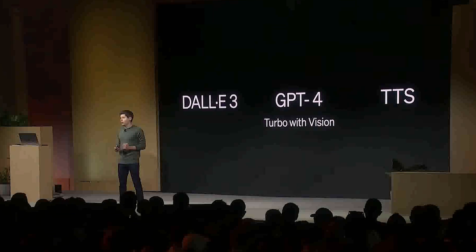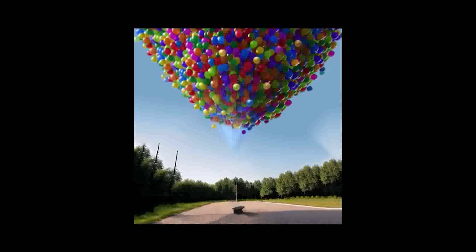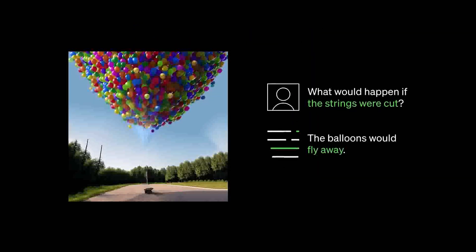Next up on the announcements were updates to the API. GPT-4 Turbo with Vision can accept images as inputs in the chat completions API, enabling use cases such as generating captions, analyzing real-world images in detail, and reading documents with figures. This has already been available in ChatGPT Plus subscriptions for a while, but it's now coming to the API.